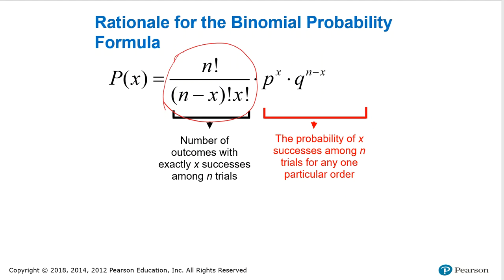So it's the number of x's that can be selected from n number of items. And in your calculator, you actually have a shortcut key, a built-in feature, that will find this value for you without you having to worry about dealing with the factorial key.